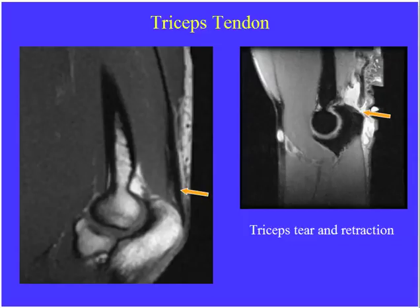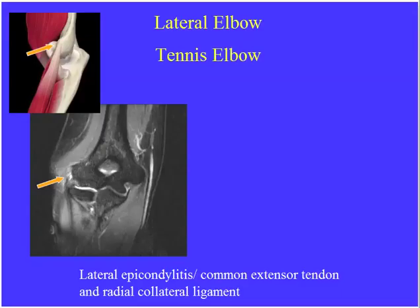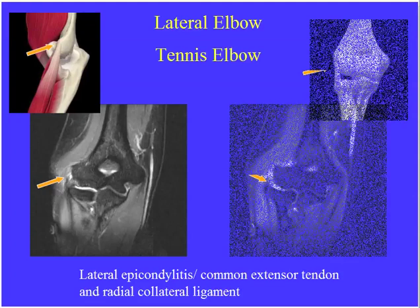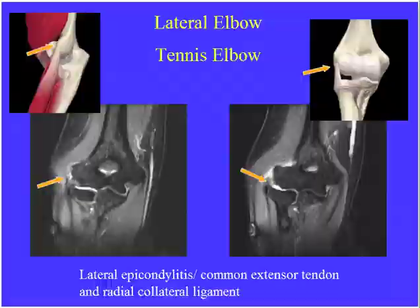They may also show triceps tendon disruption in the sagittal plane — normal triceps tendon coming down and inserting into the olecranon, with a full thickness tear and adjacent edema. For medial and lateral epicondylitis: along the lateral elbow, the common extensor tendon inserts into the lateral epicondyle. Normally this is completely dark — a tendon should be black on T1 and T2. High signal within the tendon at its insertion site indicates partial or full thickness tear. Often associated with common extensor tendinopathy is underlying radial collateral ligament injury, showing thickening and high signal.